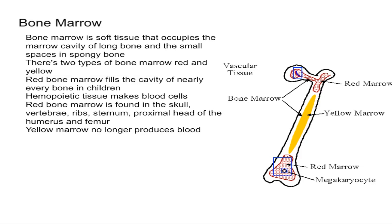You also have another type of stem cells in bone marrow called stromal stem cells, but this isn't really that important — it just creates bone cells, cartilage, and fat cells. So the most important one is the hemopoietic cells.